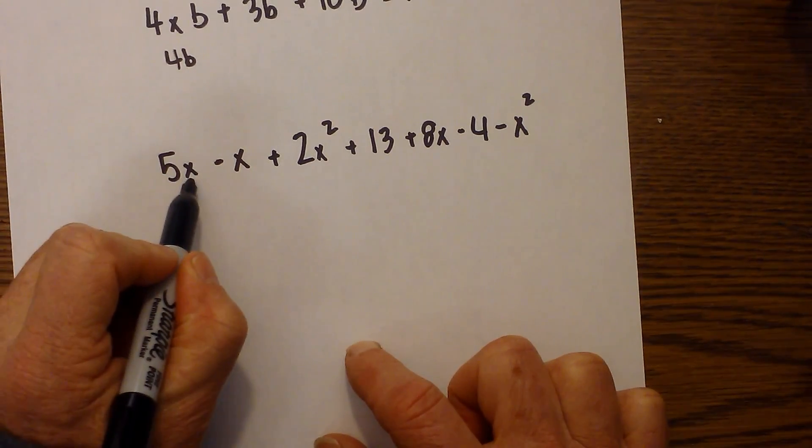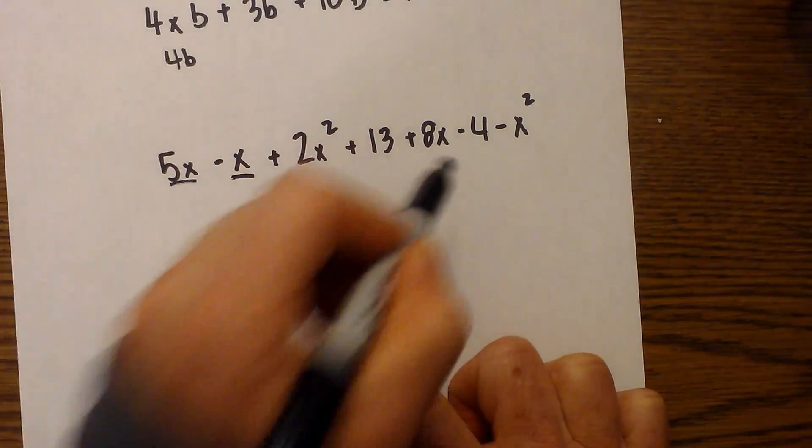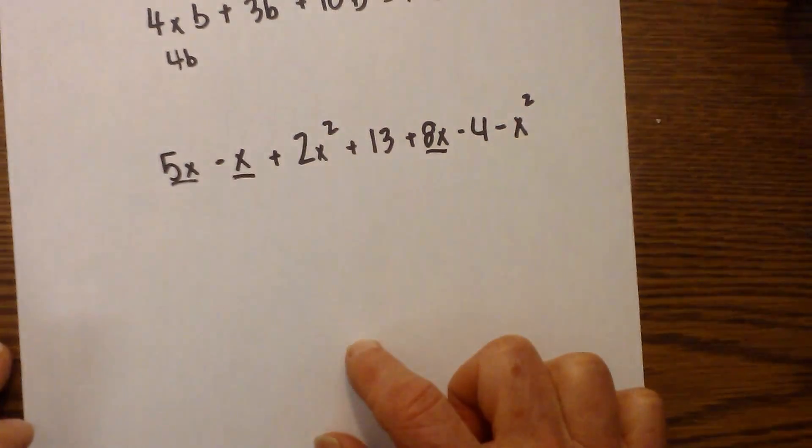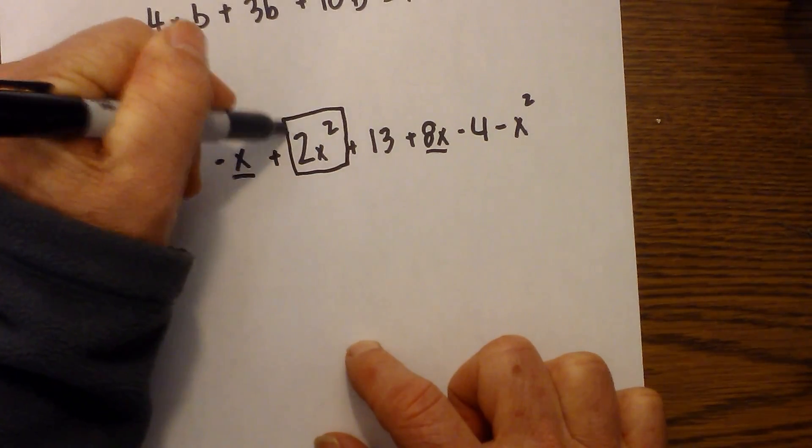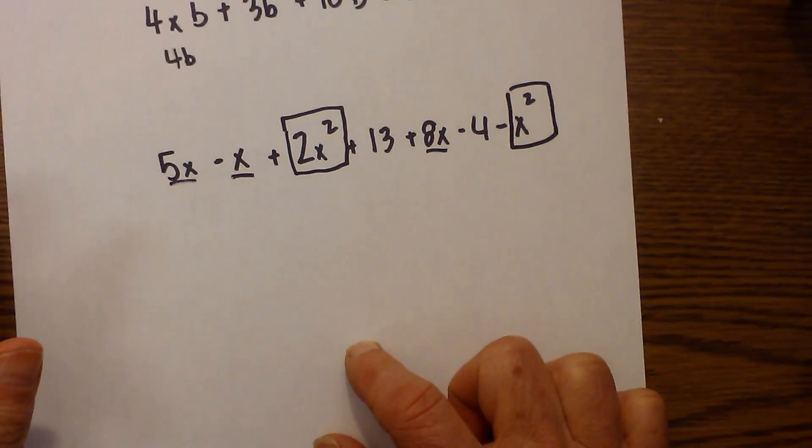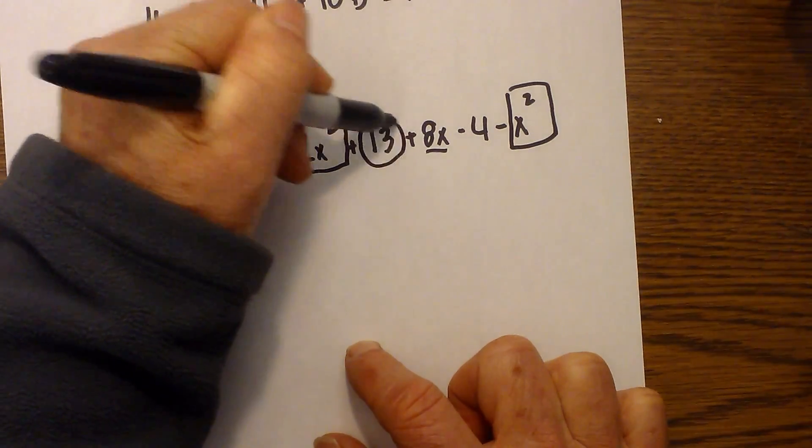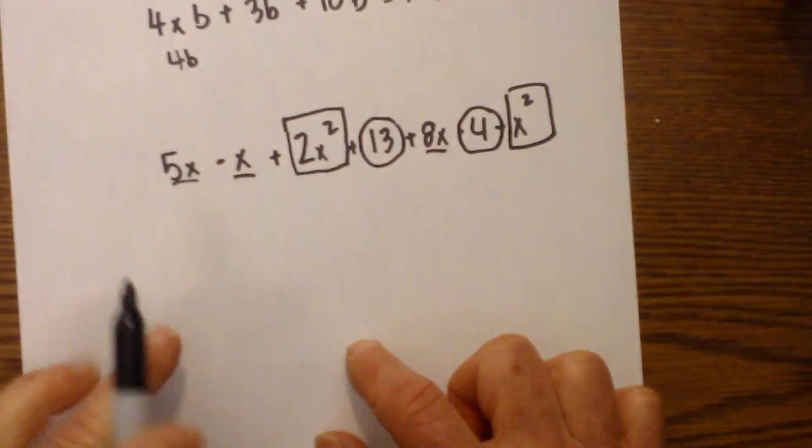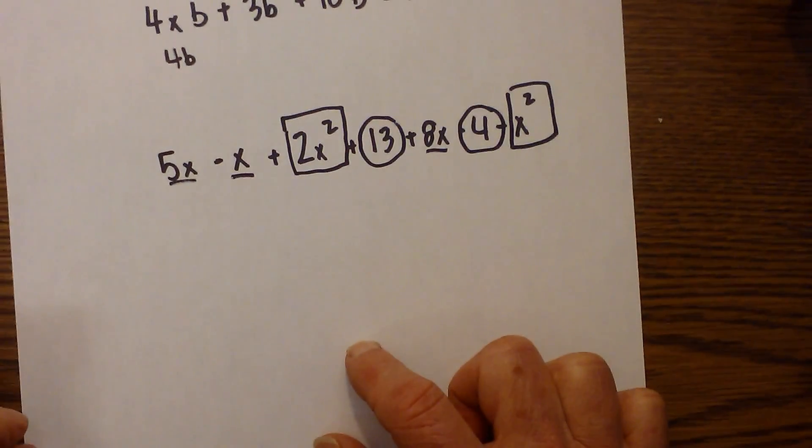So let's start underlining like terms. Let's go with just the x, let's underline. So there's one, here's one, and there's one. And let's put a square around the squared terms. And why don't we circle the numbers. So there we have underlined, squared, and circles.